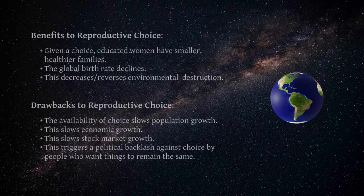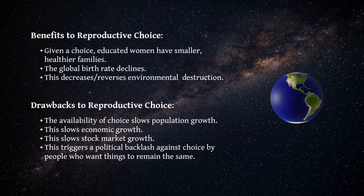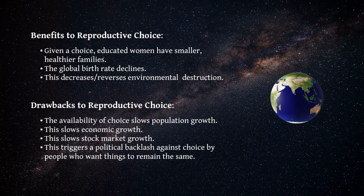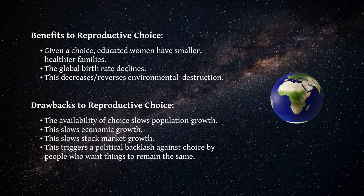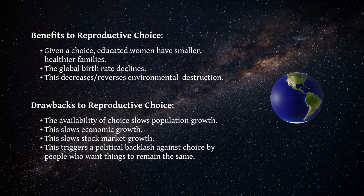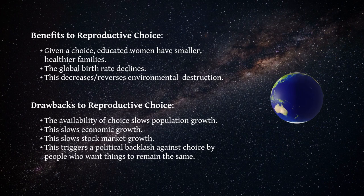Studies show educated women — women who have choice — have smaller families. Their children are healthier and better educated. If this change were universal, the global birth rate would decline and population would stabilize. The environment might begin to heal itself.